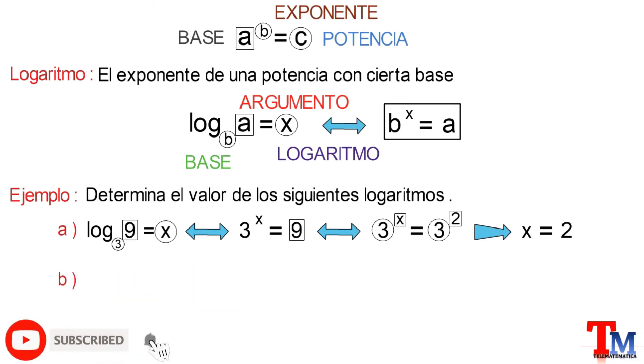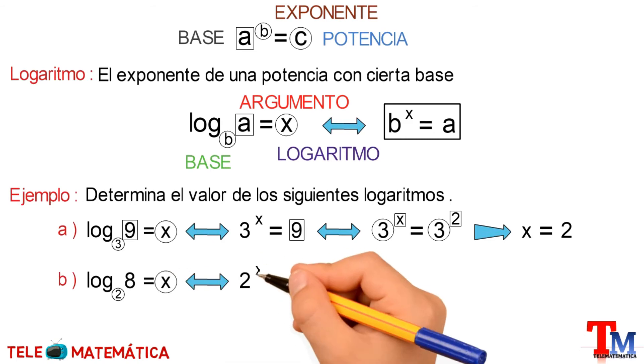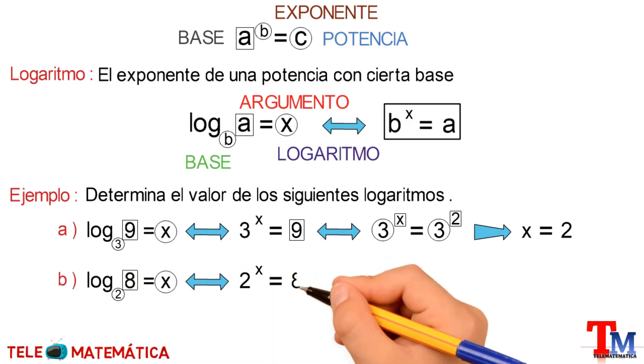Literal B: logaritmo de 8 en base 2. El logaritmo se calcula determinando el valor de X utilizando la expresión de la ecuación exponencial, donde la base 2 elevada a la X es igual al argumento 8. Luego, el 8 lo escribimos como una potencia de base 2, y nos quedaría 2 elevado al cubo.